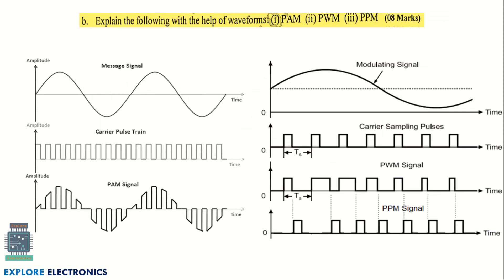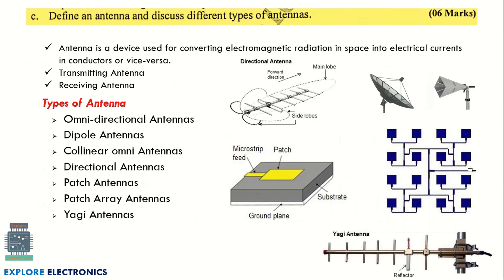The next question asks you to explain PAM, PWM, and PPM with the help of waveforms. Waveforms alone are sufficient — no need to explain how PAM is generated. Draw the message signal and carrier pulse, then show the PAM signal, the PWM signal, and the PPM signal as waveforms.